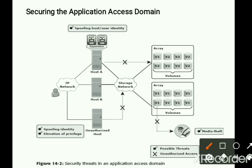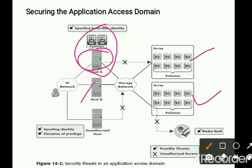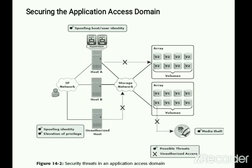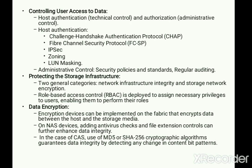Now let's see how we can secure the application domain. In this figure there is a hypervisor with Host A and Host B, where Host A is allowed to access volumes V1 and Host B is allowed to access volumes V2. User A might spoof the address or identity of Host B and try to access Host B's volumes, or an unauthorized host might try to access the network and retrieve application data or directly steal data from the storage array.